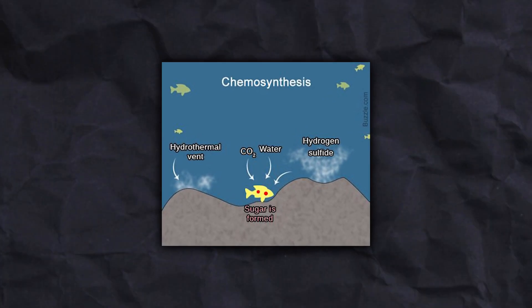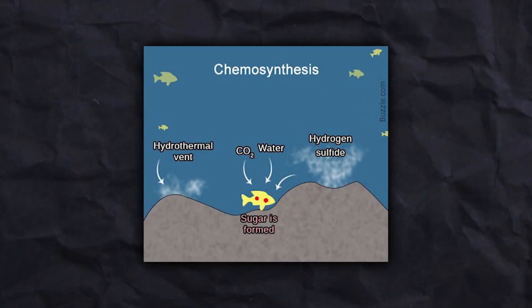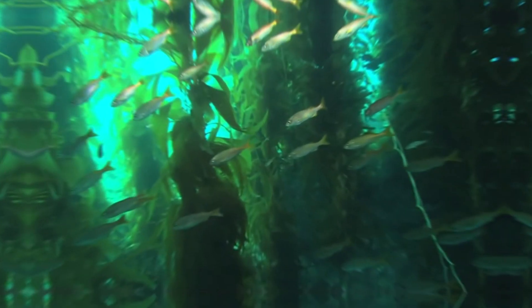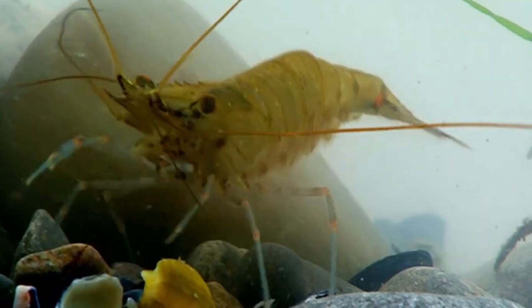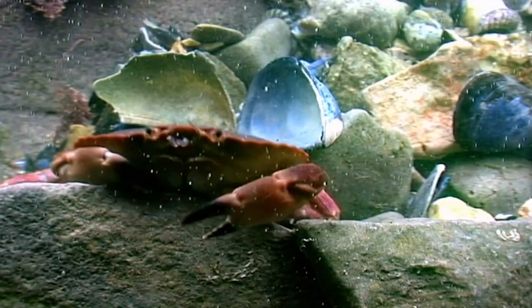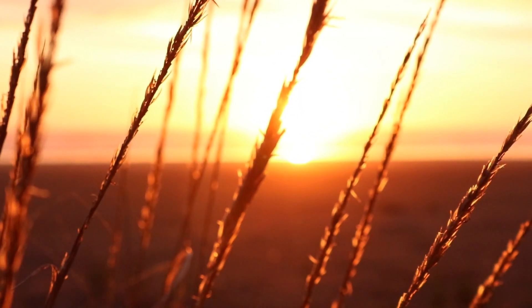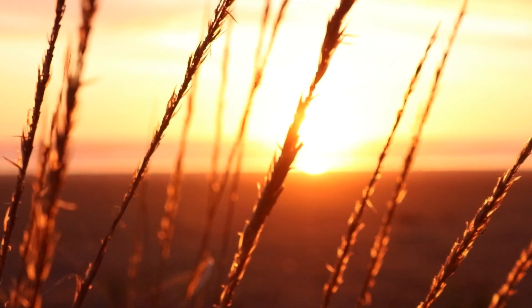Bacteria use this chemical energy in a process called chemosynthesis rather than photosynthesis. Ecosystems rely on certain creatures' capacity to transform inorganic substances into food that other organisms may use or consume. Since plants need sunlight to produce food through photosynthesis, the vast majority of life on Earth is built on a food chain that revolves around the sun.